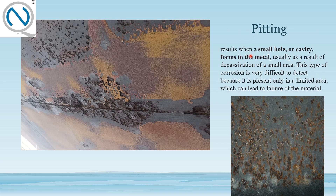What is pitting corrosion? Pitting is also common. It results when a small hole or cavity forms in the metal, usually as a result of depassivation of a small area. This type of corrosion is very difficult to detect because it is present only in a limited area, which can lead to failure of the material. General corrosion is uniform, but pitting is localized. It is easy to identify pitting by visual testing, but when it is on an inaccessible or opposite side of the material, it is very hard to detect. You can detect the initial stages of pitting with appropriate methods.